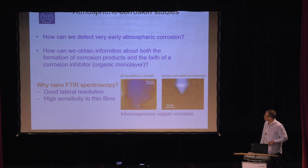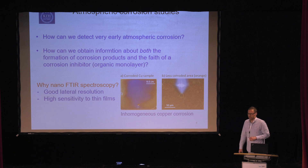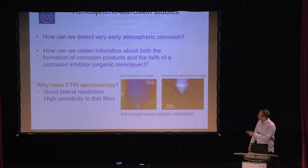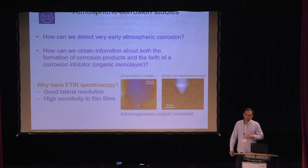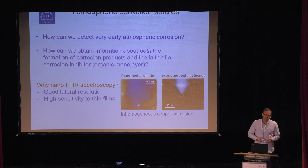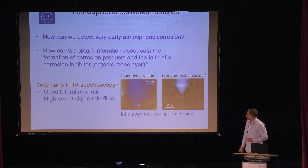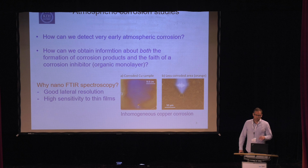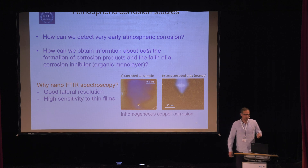Some questions we have: first, how can we detect very early corrosion? Why does it start, and where on the surface does it start? We're also interested in putting on protective layers. In some cases you cannot use really thick films, so we work with really thin films — like two nanometers thick organic films — to protect metals from corrosion. And why would we ever use nanoFTIR microscopy? Well, a lot of work has been done with conventional IR microscopy and confocal Raman, for example.